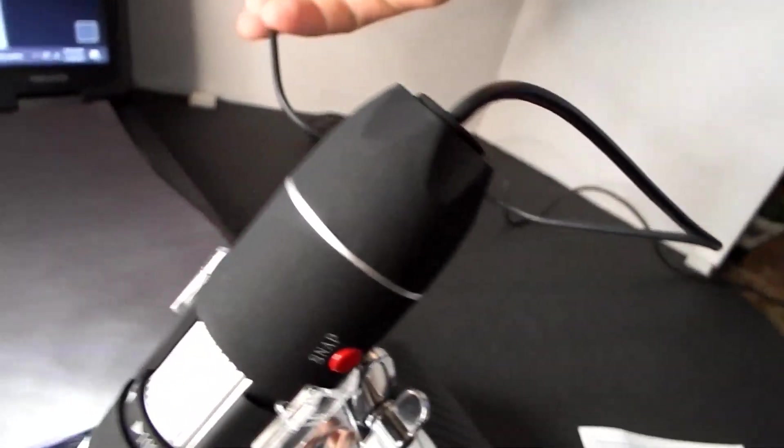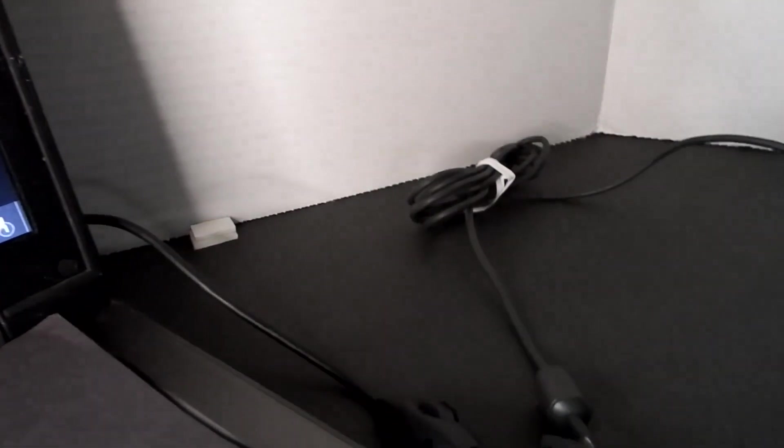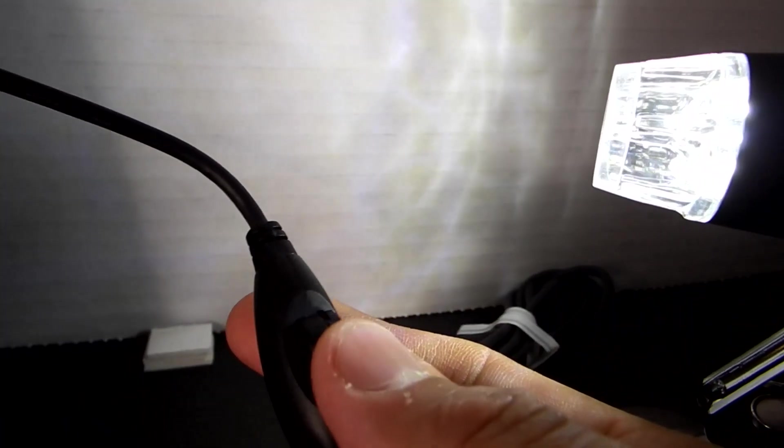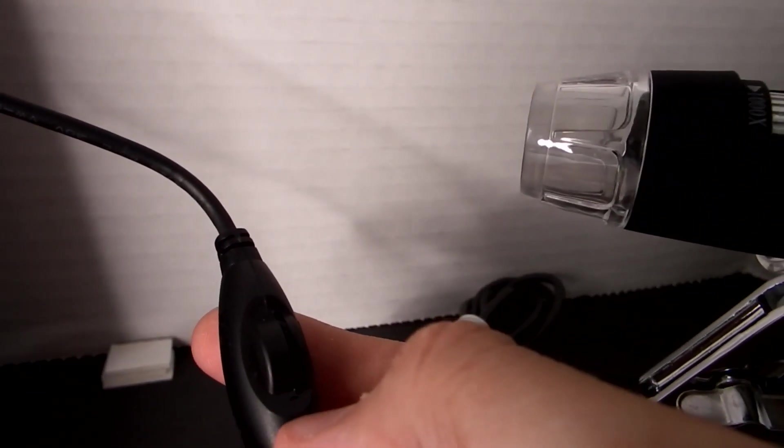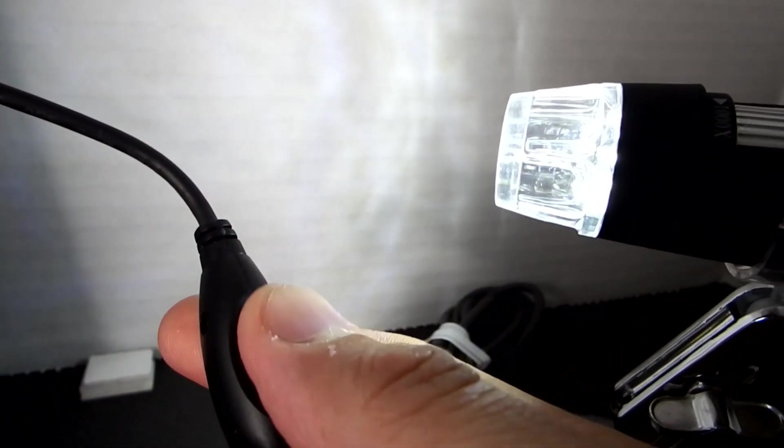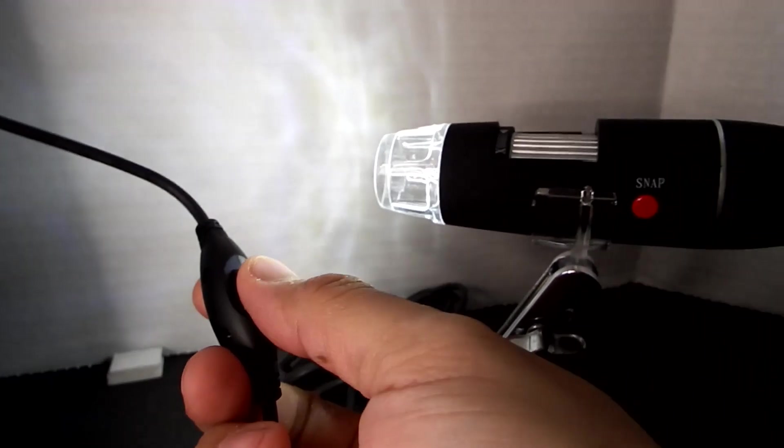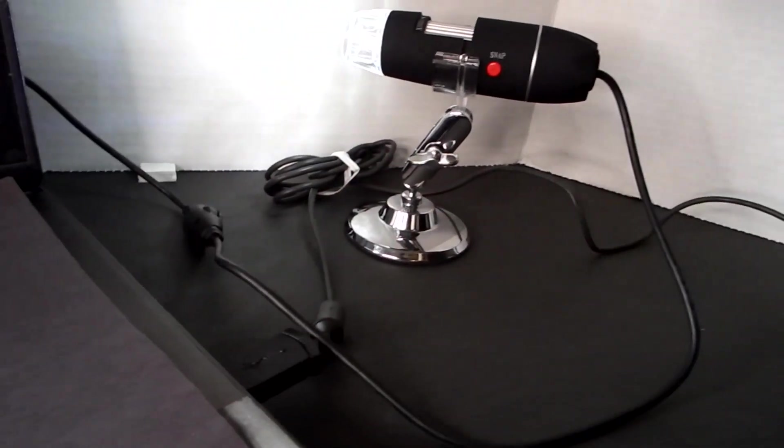There you go, camera is on and lit up. The LEDs automatically turn on. Now if you want to lower the brightness you do have the option. The wire has a knob right here, I'll show you. The light to the camera is right here. This has a wheel knob, you turn the wheel knob and it'll lower the brightness and it will actually turn it off as well.